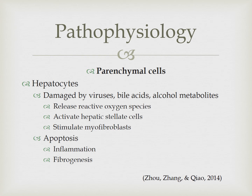There is one main type of parenchymal cell, the hepatocyte, also known as the cell of the liver. They are targeted by hepatitis viruses, alcohol metabolites, and bile acids. The damaged hepatocytes release reactive oxygen species, which are a byproduct of oxygen metabolism. They activate the hepatic stellate cells and stimulate the myofibroblast. Over time, these damaged hepatocytes cannot sustain the damage anymore, leading to apoptosis or cell death, which contributes to tissue inflammation, fibrogenesis, and the development of cirrhosis.